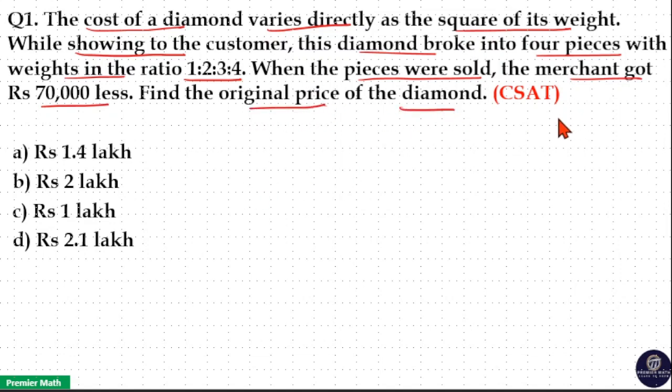The question says cost of the diamond varies directly with the square of its weight, which means the reduction in square of its weight leads to this Rs. 70,000 loss.